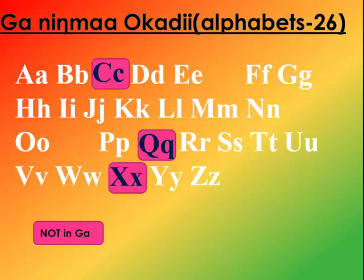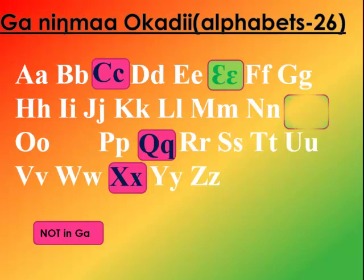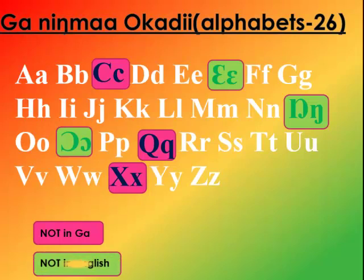The first one that we've got here will be Ɛ. Notice the pronunciation because GAN is a tonal language, so you need to get the pronunciation right. The next one is NG. And the last one here is Ɔ. These are the three main letters that are not in English.